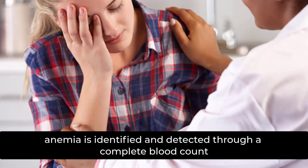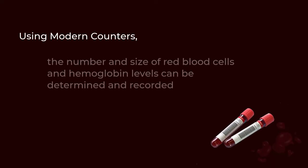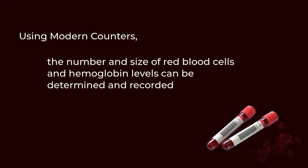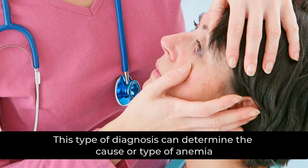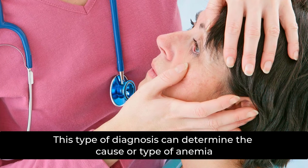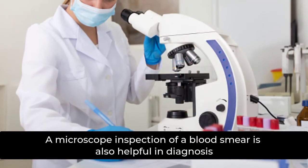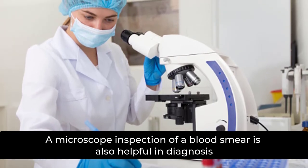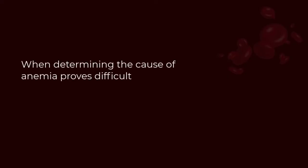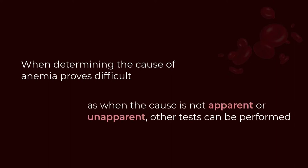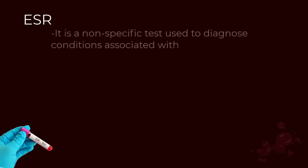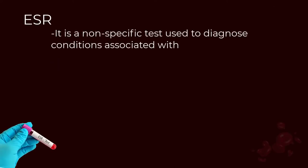Generally, anemia is identified and detected through a complete blood count. Using modern counters, the number and size of red blood cells and hemoglobin levels can be determined and recorded. This type of diagnosis can determine the cause or type of anemia. A microscope inspection of a blood smear is also helpful in diagnosis when determining the cause proves difficult.